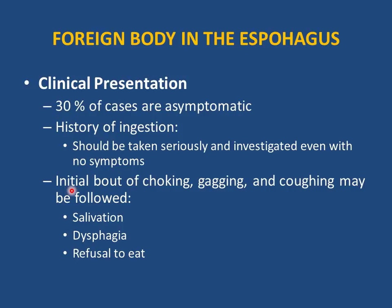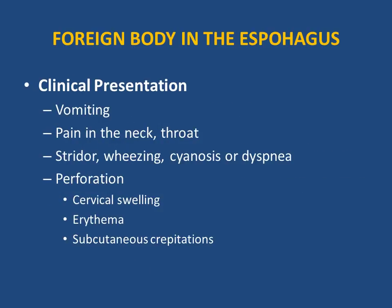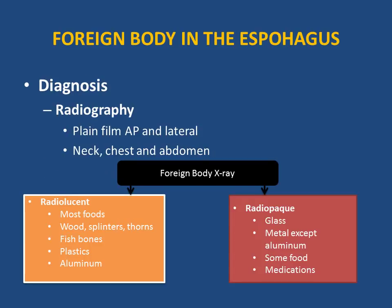If symptoms develop, the child presents initially with choking, gagging, and coughing, followed by salivation, dysphagia, and refusal to eat. Vomiting, neck/throat pain, stridor, wheezing, cyanosis, or dyspnea may occur if the foreign body impinges on the larynx. Worst case scenario is perforation: swelling in the cervical area, erythema, and subcutaneous crepitation. If ingestion is suspected, x-rays must be taken even without symptoms.